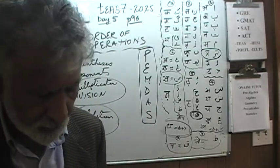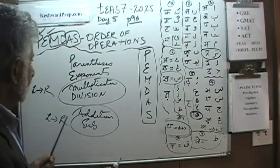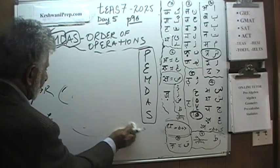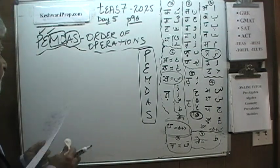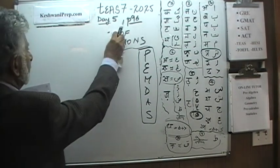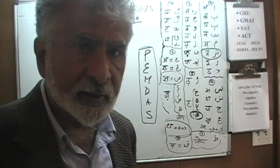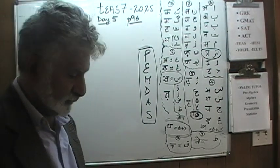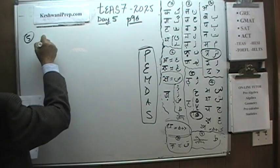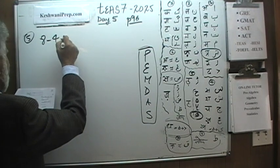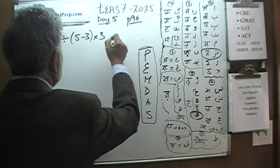Today we are going to do three problems that you will find on page number 96. We did problems 1 through 4 yesterday. We are going to pick up from number 5. Problem number 5: 8 minus 4 divided by, open parenthesis, 5 minus 3, close parenthesis, times 3 plus 11.